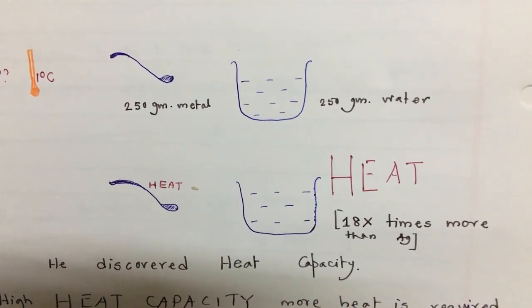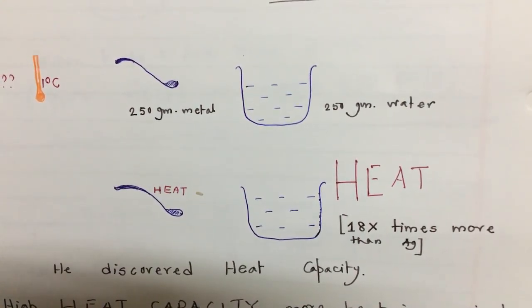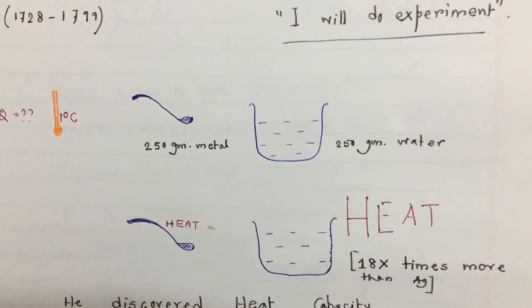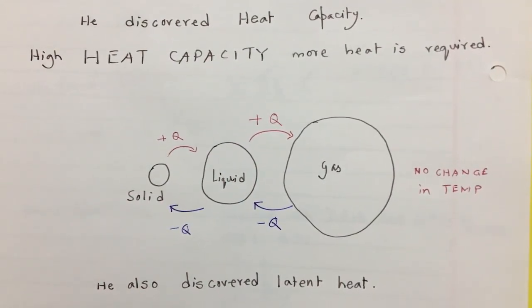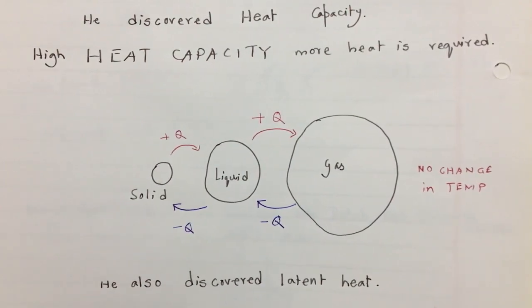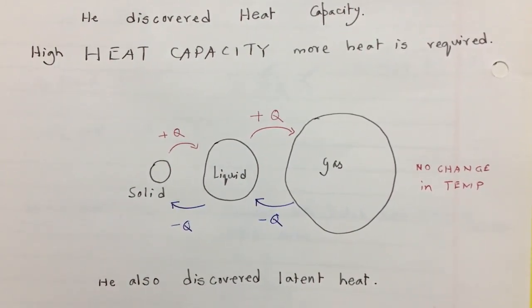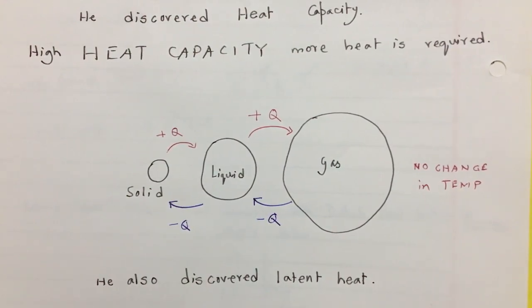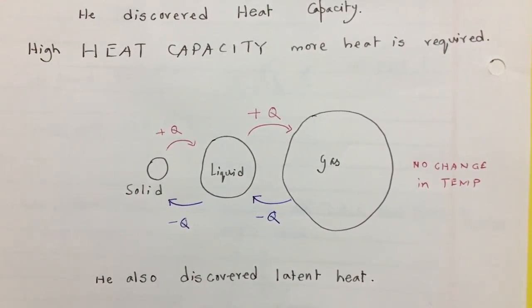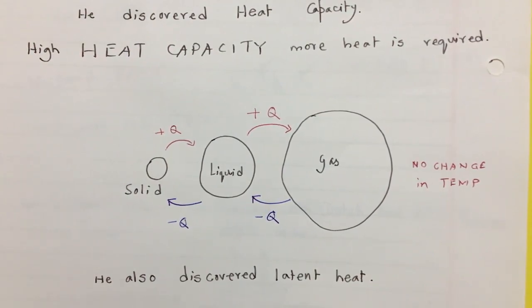So he discovered heat capacity. If heat capacity is high, more heat is required. It's as simple as that. Now he discovered one more thing which is latent heat. Latent means hidden, so it's undetected by thermometer.